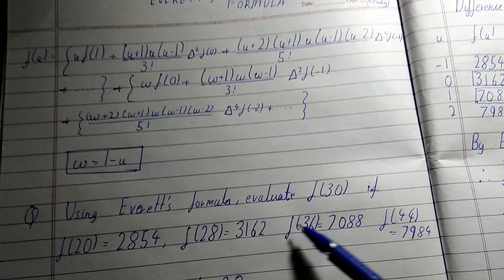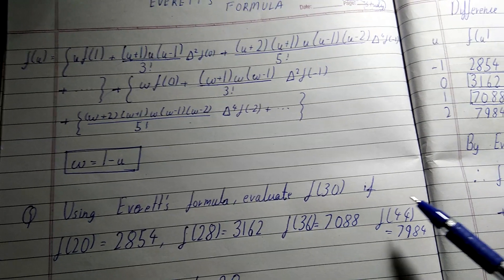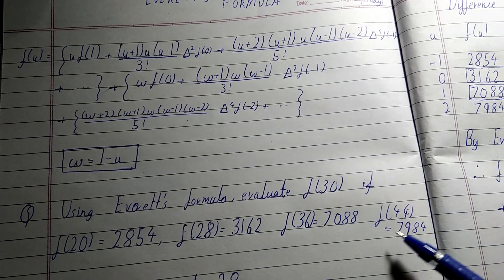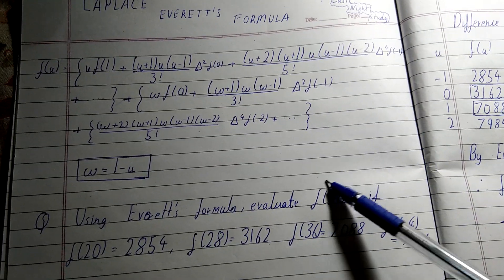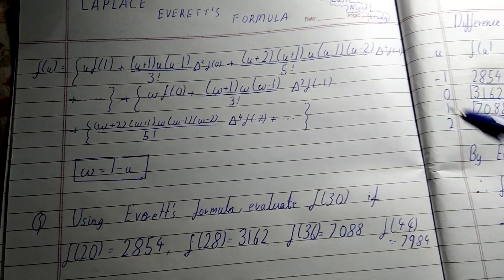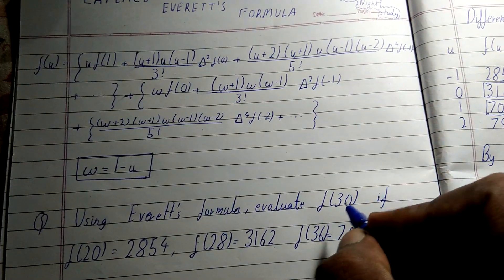...f(36) = 7088, and f(44) = 7984. So we have four values and we have to find f(32). Now, again, go to that concept that the origin will be the value that is nearest.